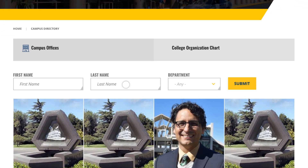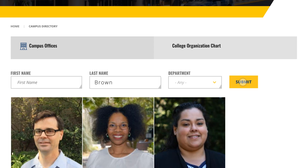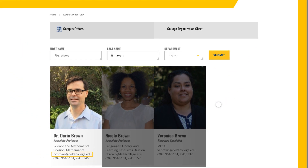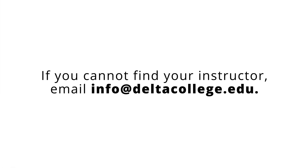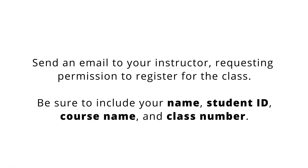Next, use the campus directory on the Delta College website to look up the email address for the instructor of the course. If you cannot find your instructor, email info at deltacollege.edu. Once you have found your instructor's email address, send them an email and request permission to register for the class. Be sure to include your name, student ID, course name, and class number.